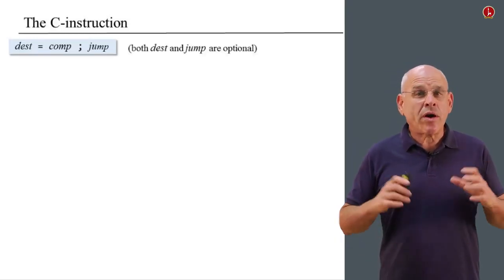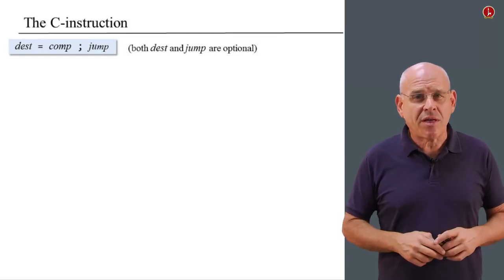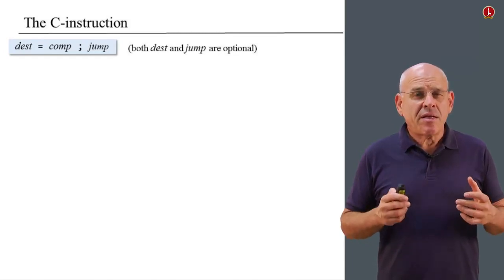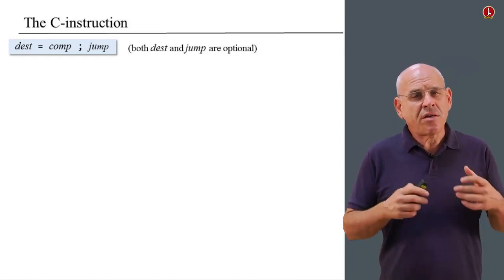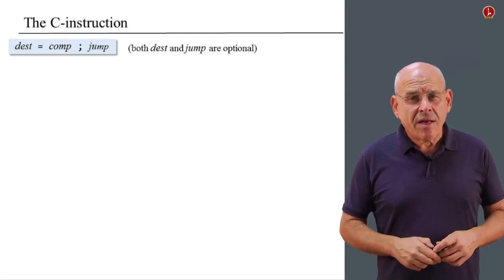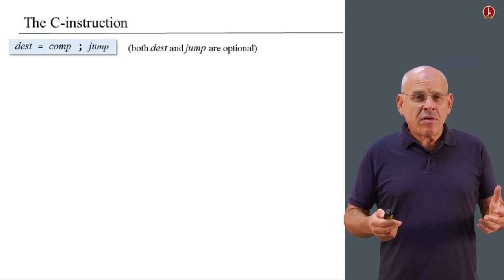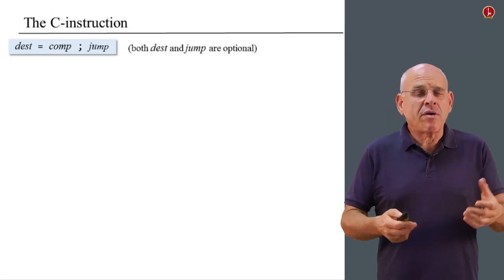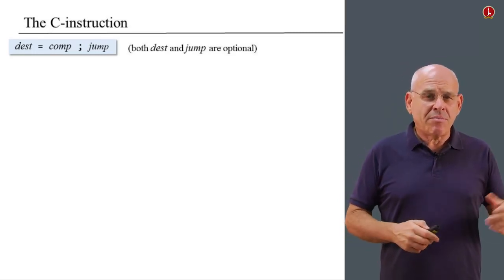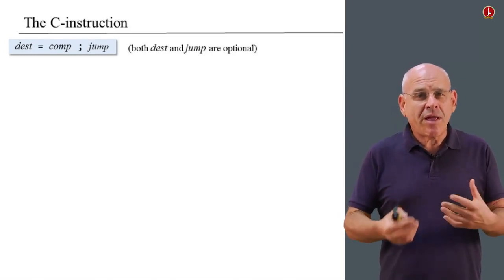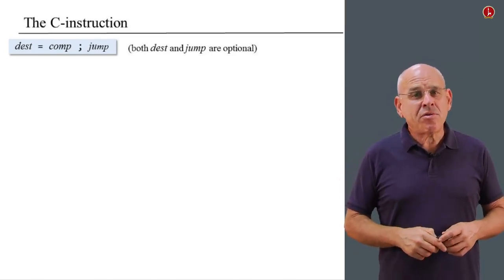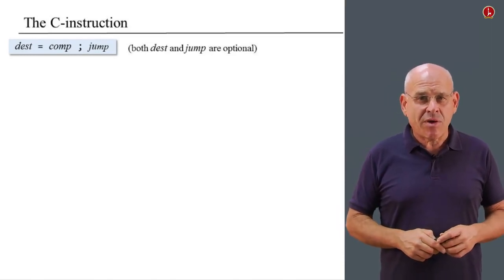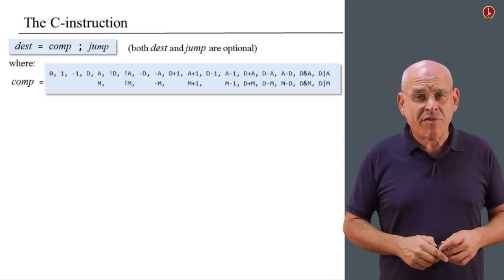The C instruction is the workhorse of the language — that's where most of the action takes place. The syntax of this instruction consists of three different fields: destination, computation, and a jump directive. Here is how it works: first, we compute something. Then we can either store the result of the computation in some destination, or we can use this computation to decide if we want to jump to some other instruction in the program. That's the basic overall semantics of the C instruction.